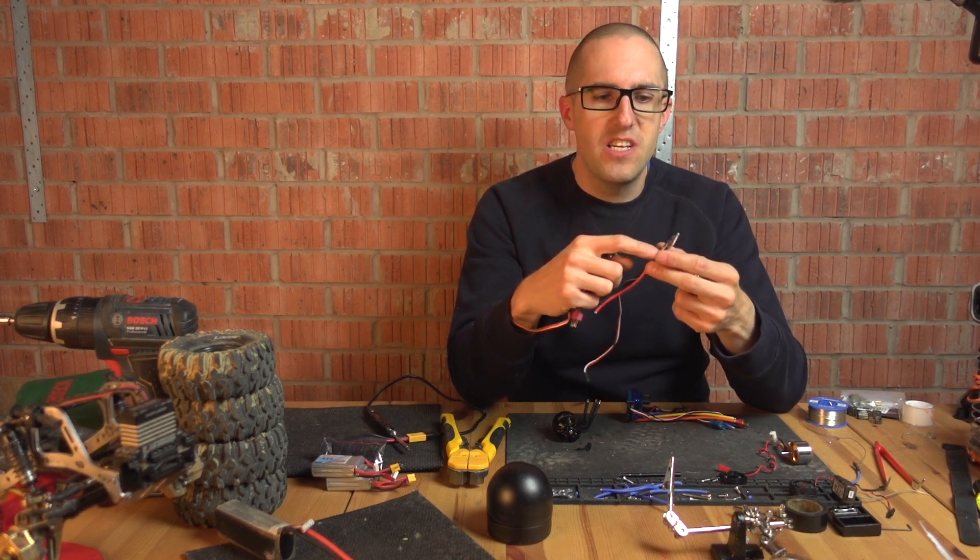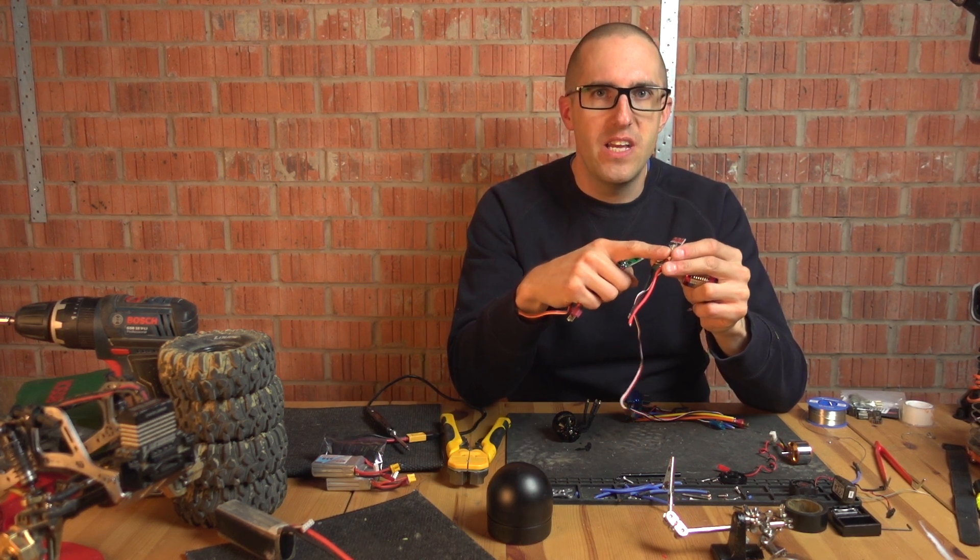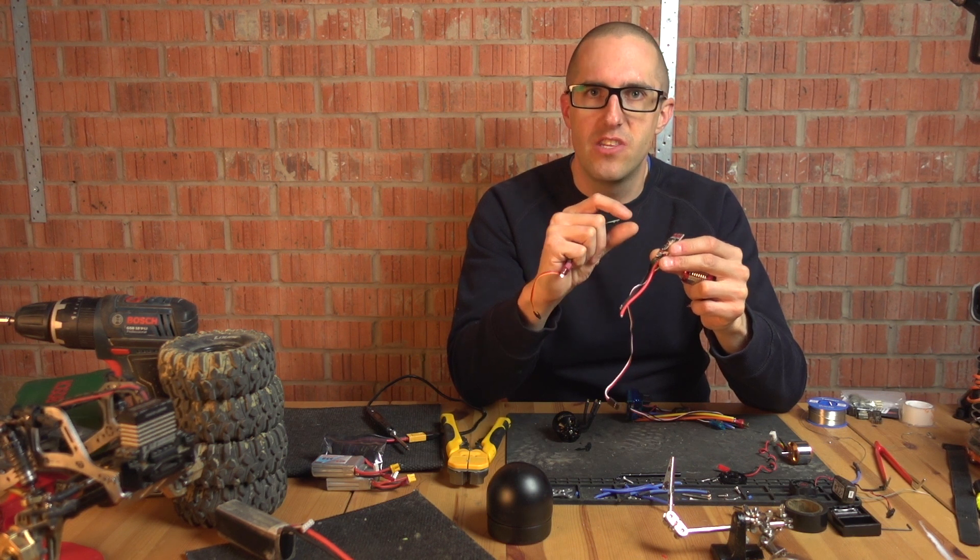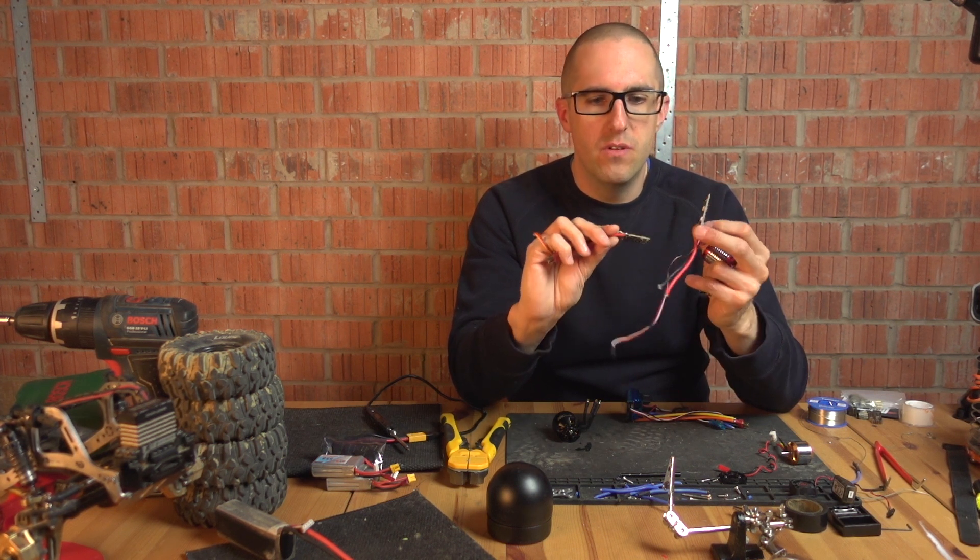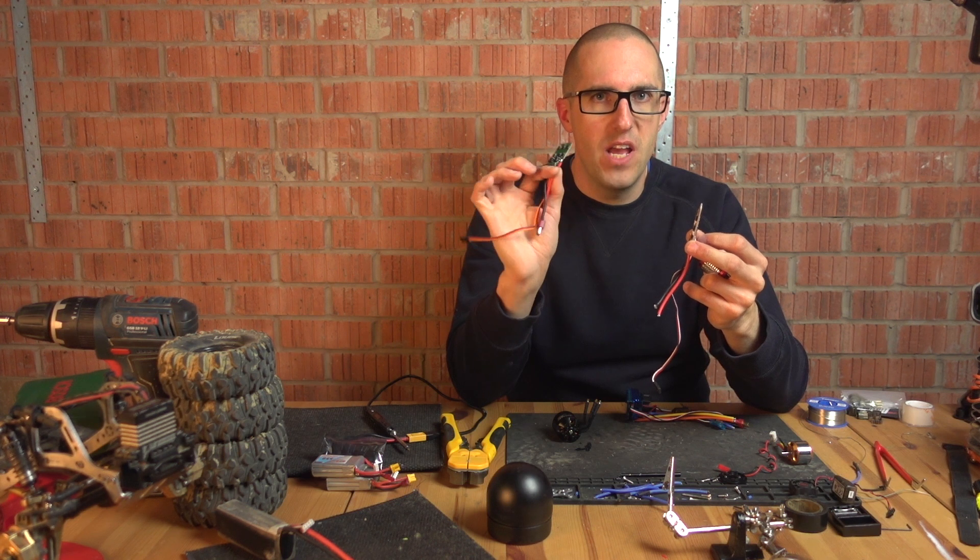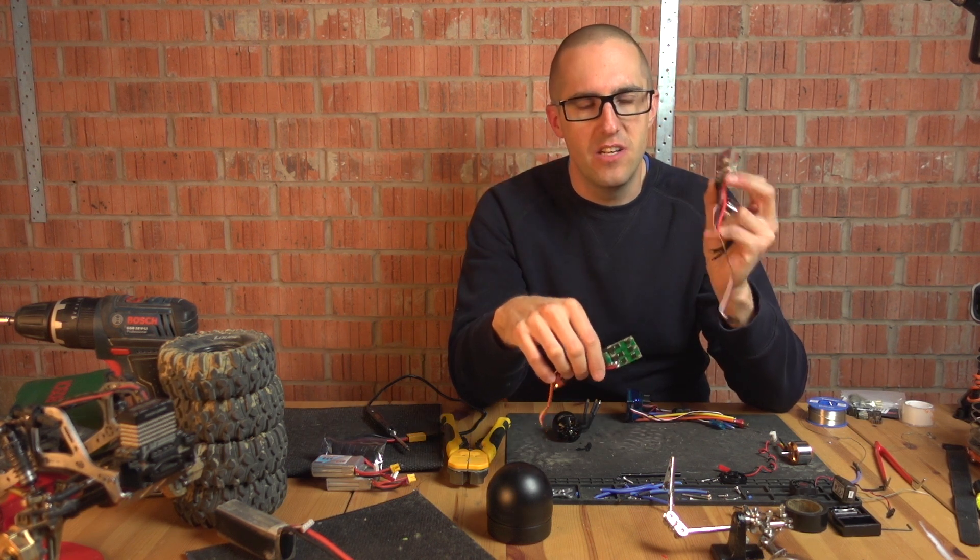Also these ESCs, they just had a flat plate heat sink that wasn't very thick. This one had a heat sink on both sides, this one had a heat sink on one side.